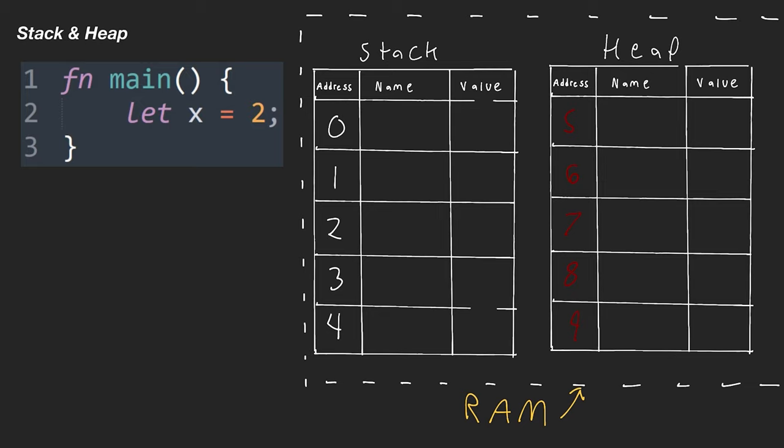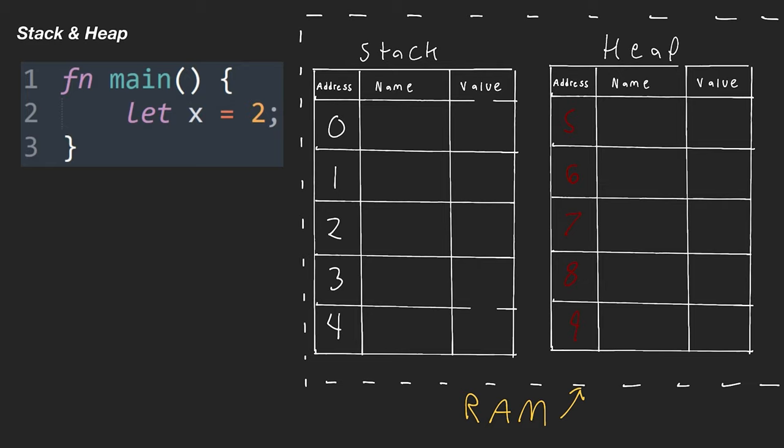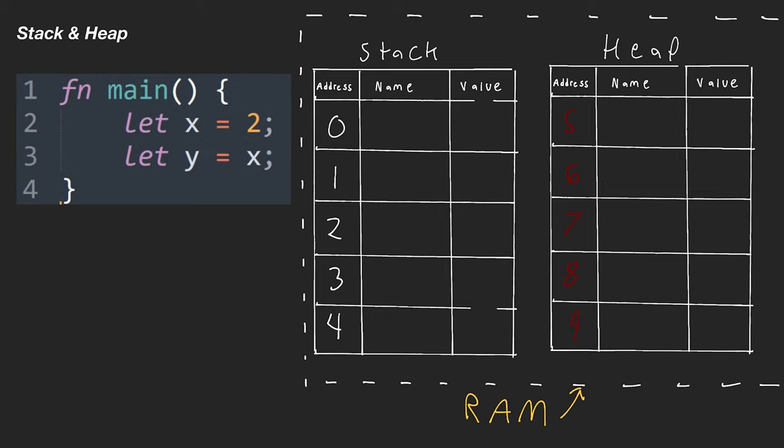We've essentially garbage-collected information from RAM that we're no longer using. The basic concept is: we go through a function, see a statement like let X = 2, add X into RAM, and as soon as we're outside the scope where this information is used, we automatically remove it from the stack.